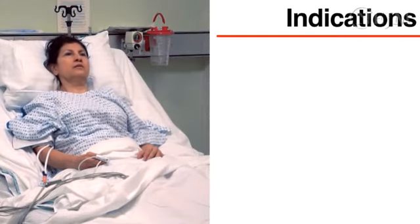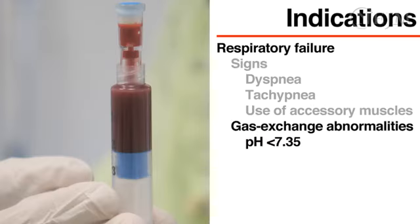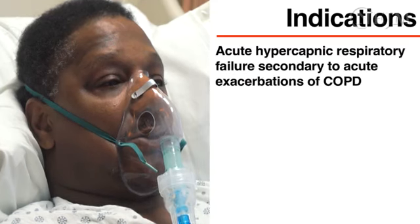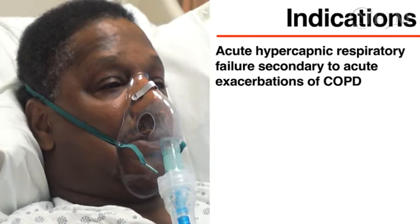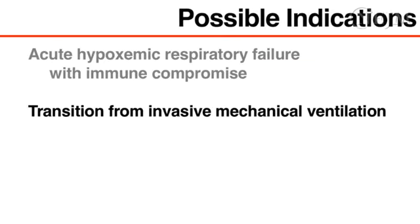Consider the use of BPAP when a patient has evidence of respiratory failure. Signs include dyspnea, tachypnea, or use of the accessory muscles of respiration. Gas exchange abnormalities include an arterial pH of less than 7.35, a PaCO2 of more than 45 mmHg, and a PaO2-to-FiO2 ratio of less than 200. There is strong evidence that BPAP improves outcomes in hypercapnic respiratory failure secondary to acute exacerbations of COPD, and that both BPAP and CPAP improve outcomes in cardiogenic pulmonary edema in the absence of shock or ischemia. There is some evidence that BPAP may be used to treat acute hypoxemic respiratory failure in patients with immune compromise and to help patients with COPD transition from invasive mechanical ventilation to spontaneous breathing. An experienced practitioner should determine appropriateness on a case-by-case basis.